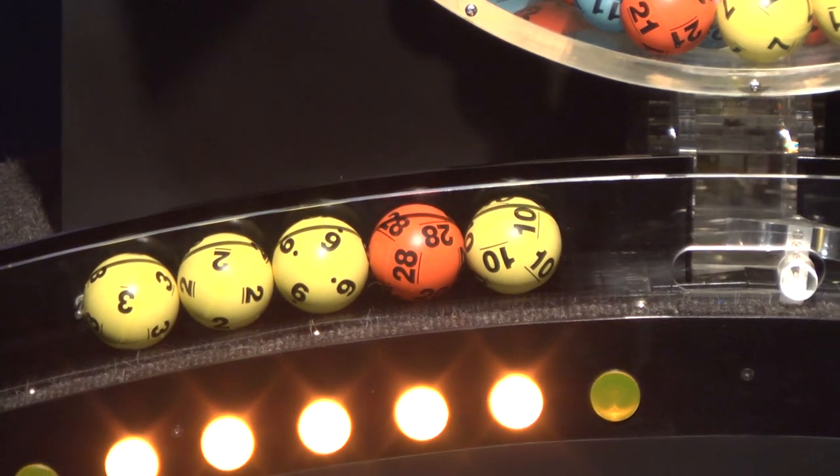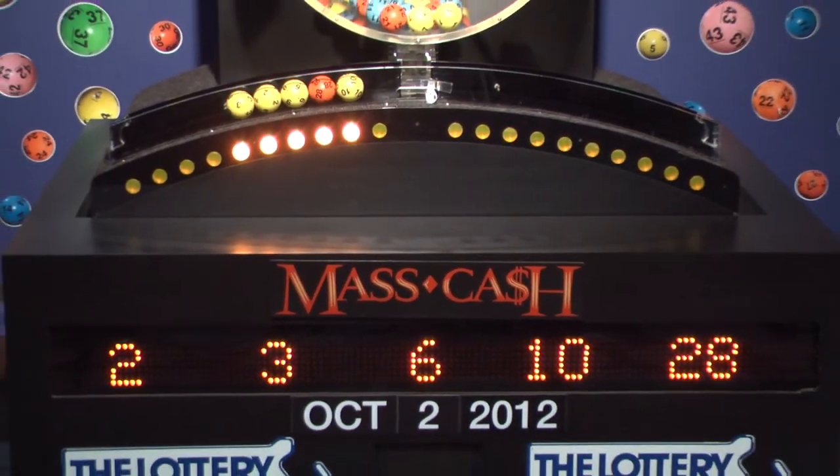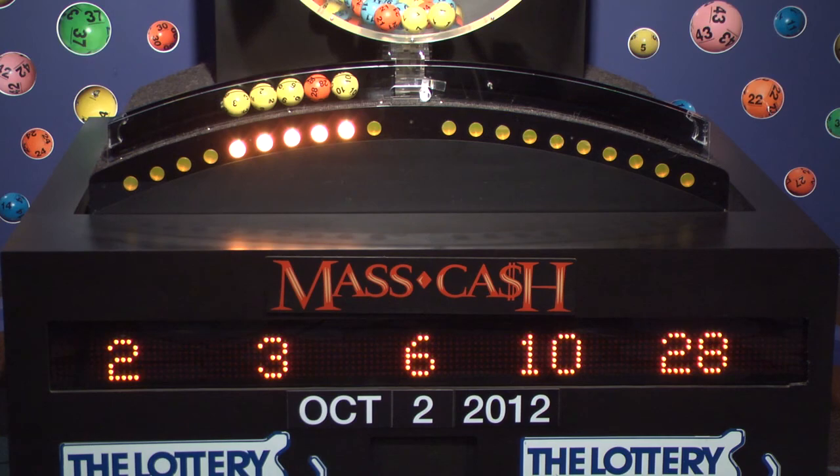Once again, the winning Mass Cash numbers for Tuesday, October 2, are 2, 3, 6, 10, and 28.